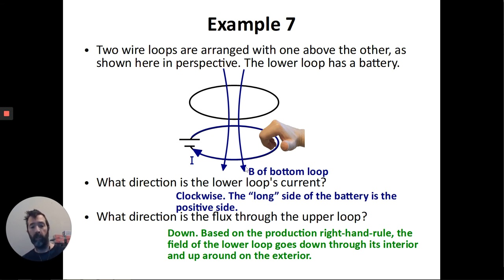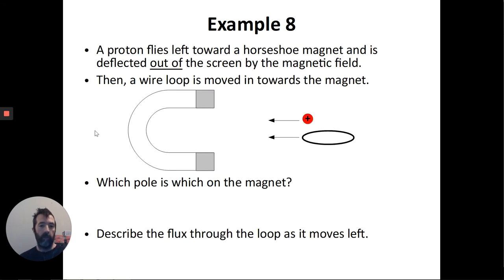And so the field within this entire interior also goes down. On the exterior, the loop goes up. Again, you get like a dipole-shaped field. So this field line is going to wrap around, come back. But we only care about the direction of the field on the interior.